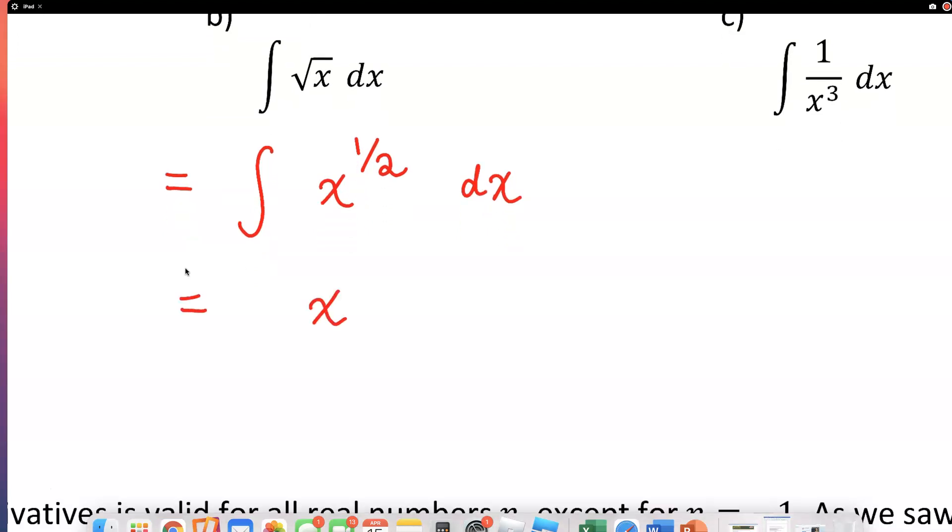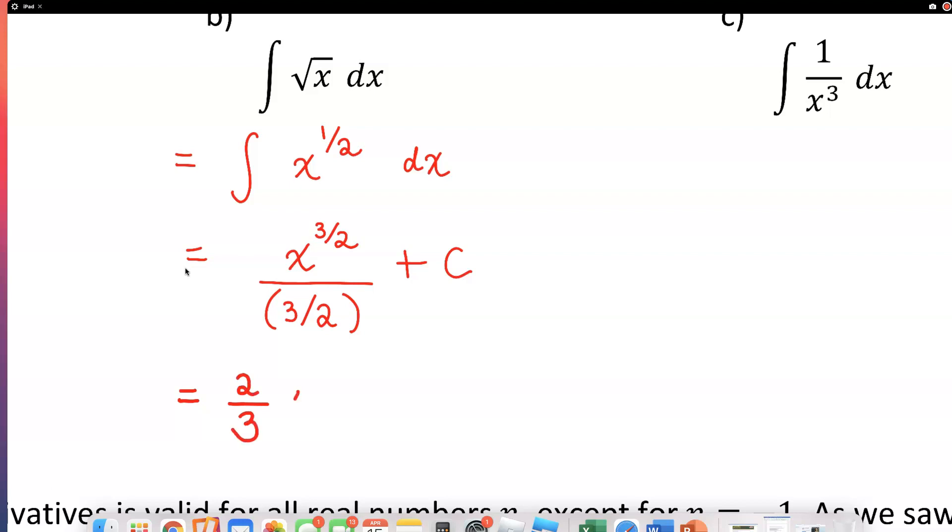Increase the exponent by one. So you have to do half plus one. Half plus one is three half. And you need to divide this by three half. Divide by whatever that new exponent is and put that plus C. But dividing something by a fraction, dividing by a fraction is same as multiplying by its reciprocal. So instead of dividing it by three over two I'm gonna multiply by two over three so that I can write it a little bit nicer. And that is it for the second example.